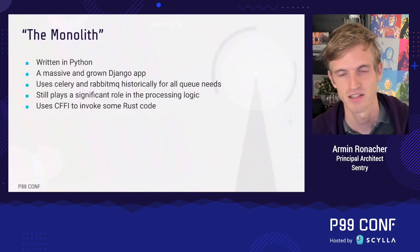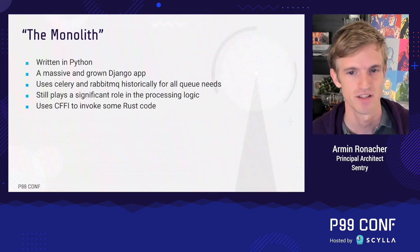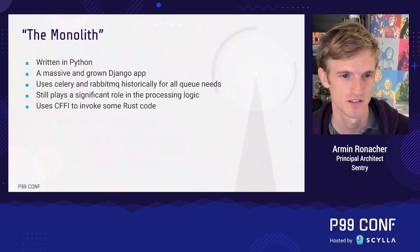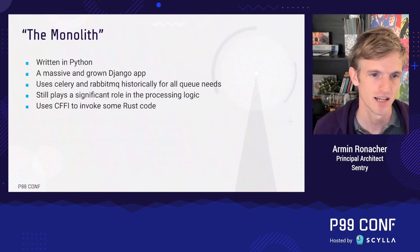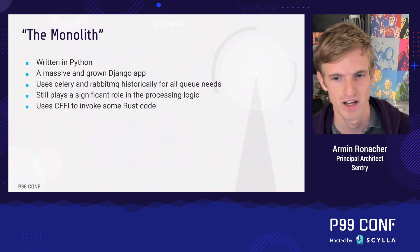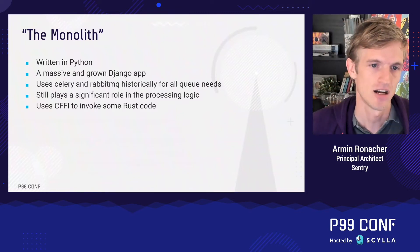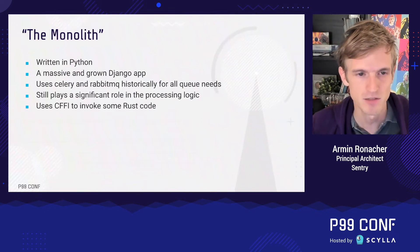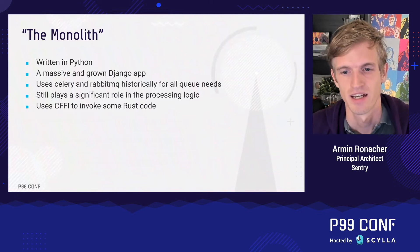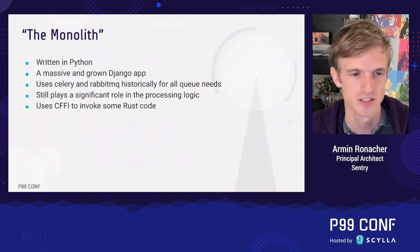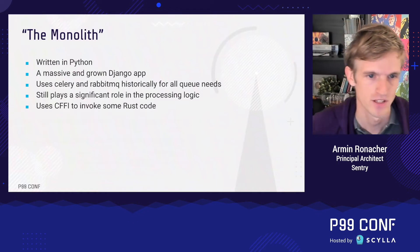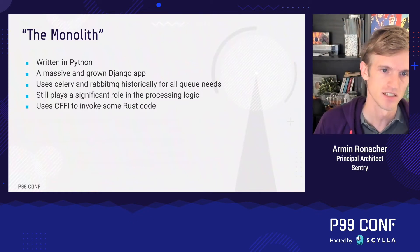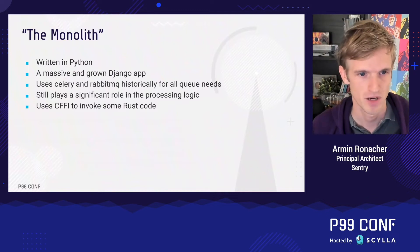The biggest part of our codebase is the monolith — written in Python, it's the original Django core Sentry app. It established the pattern of using RabbitMQ via the Celery abstraction layer, which is still how much of the processing pipeline works. When we ran into challenges, we resorted to invoking Rust code via CFFI. We've introduced a lot of Rust over the years, using it both in independent services and to augment the Python libraries.